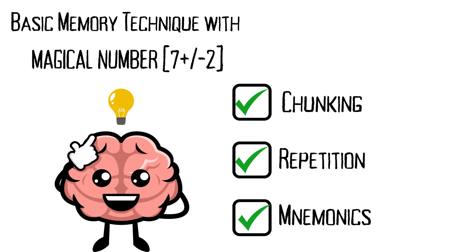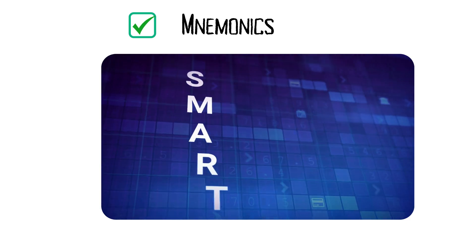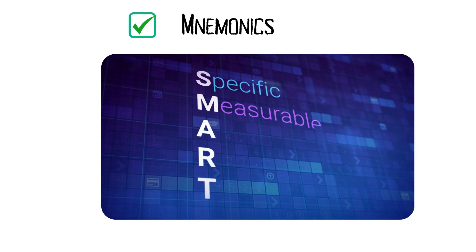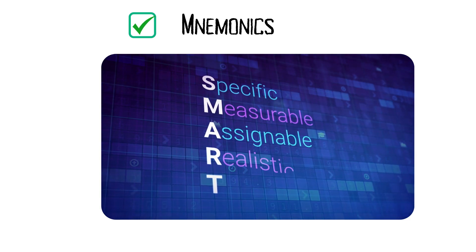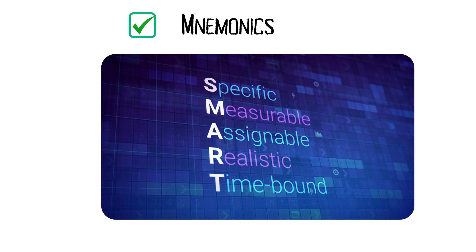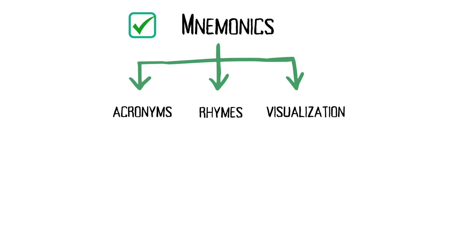Next, mnemonics. Mnemonics are memory aids that help you encode information in a way that's easier to remember. There are many types of mnemonics, including acronyms, rhymes, and visualization techniques.